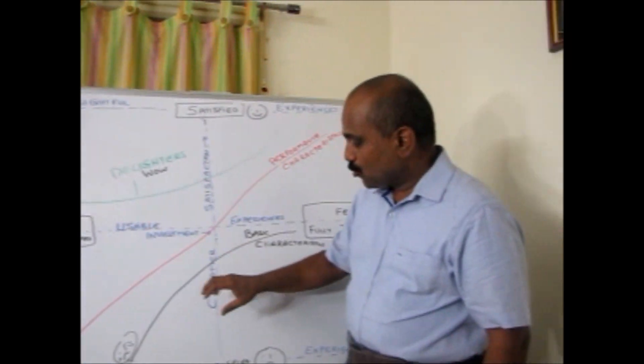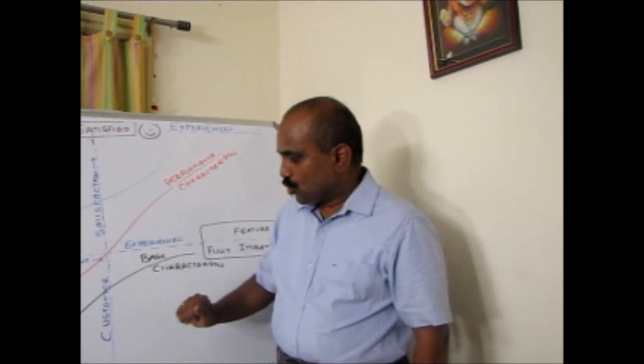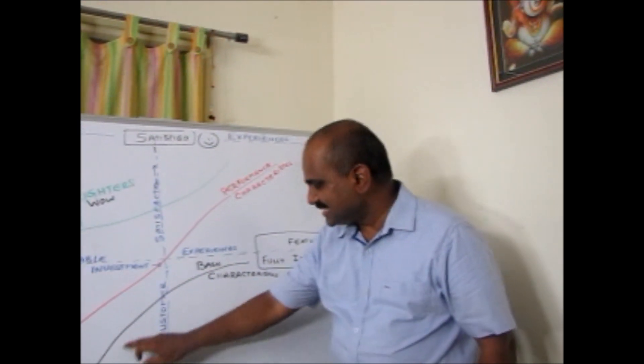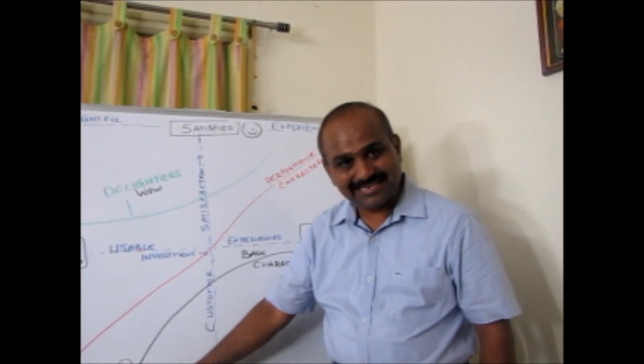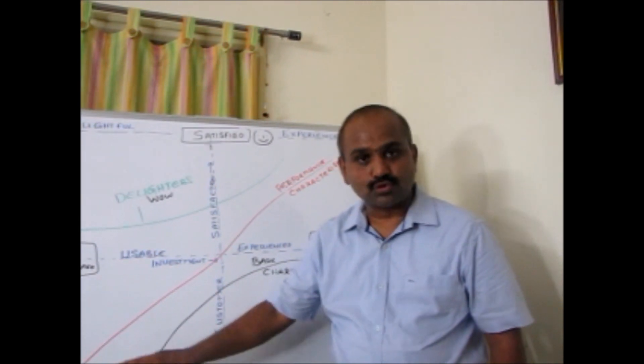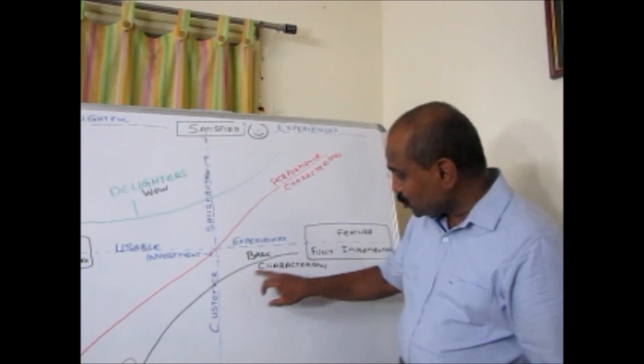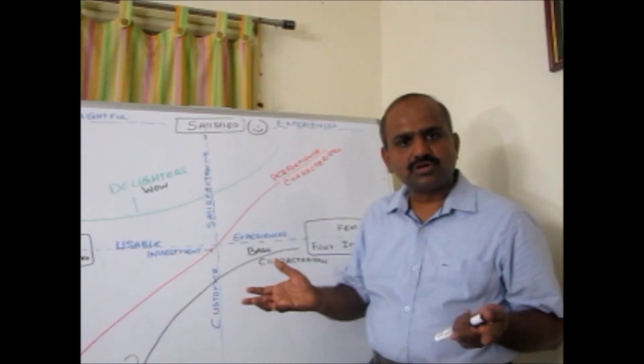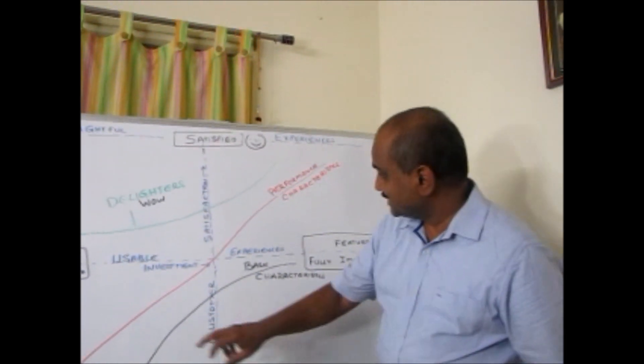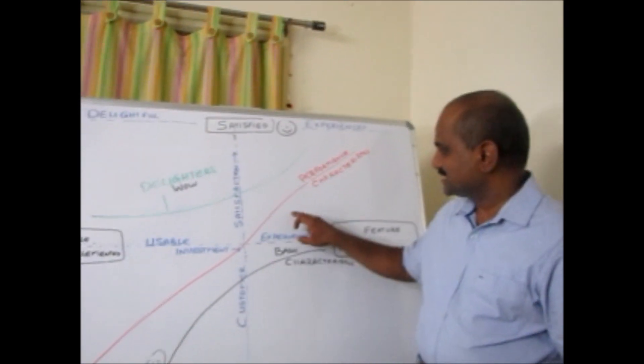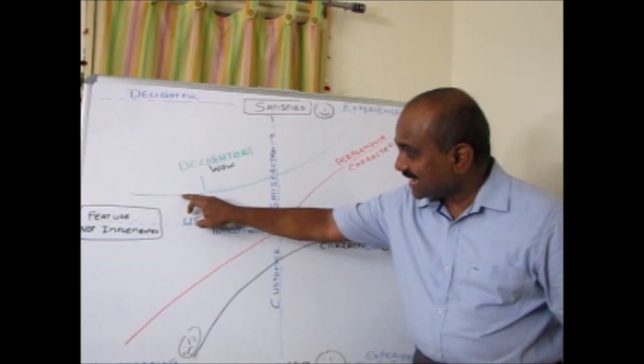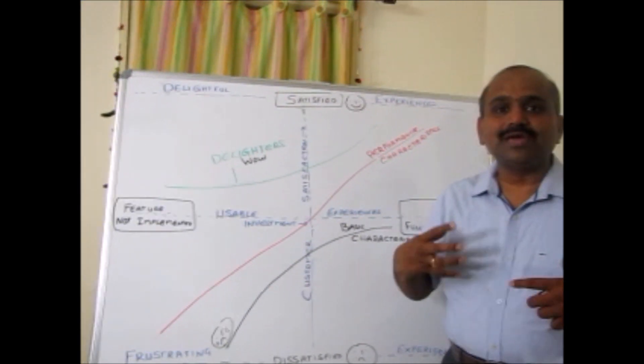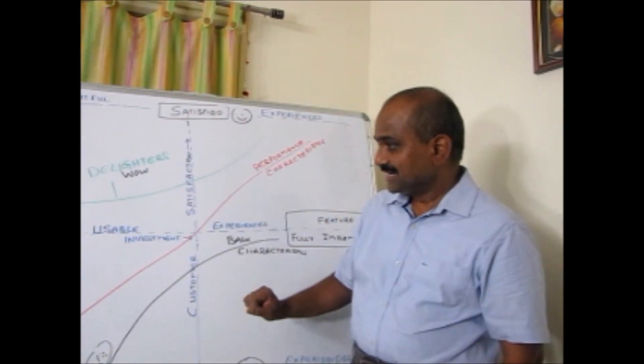So now, in Kano analysis, we get three patterns. Basic characteristics means if you don't do it, customer gets frustrated and they may go to competitors. The more you do, customers may not mention about it, but something they expected. The second thing is performance characteristics. Performance characteristics is more you do, more happy the customers are. Delighters means you actually create a wow feeling.